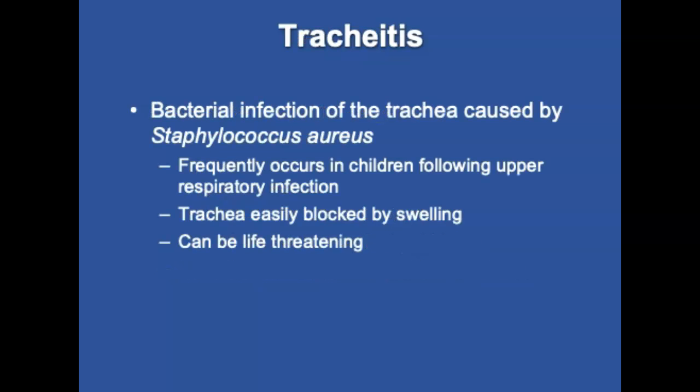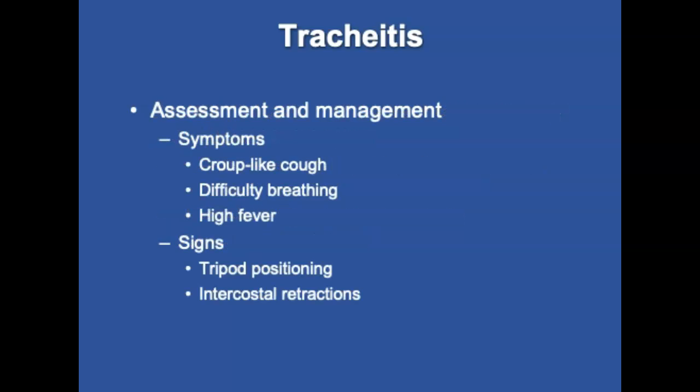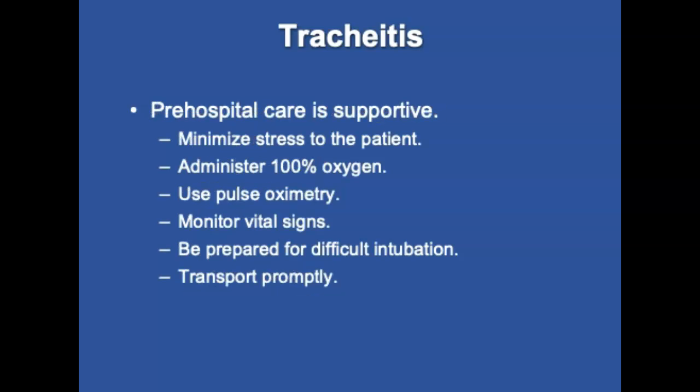Tracheitis is a bacterial infection of the trachea that frequently occurs in children following an upper respiratory infection. The trachea is easily blocked by swelling, making it life-threatening. Symptoms include a croup-like cough, difficulty breathing, high fever, and high-pitched stridor. The patient will be in the tripod position with intercostal retractions and can progress from respiratory distress to full respiratory failure if not addressed. Minimize stress, administer 100% oxygen, use pulse oximetry, and monitor vital signs. Be prepared for intubation with the correct ET tube and smaller sizes available, and transport promptly to the appropriate facility.